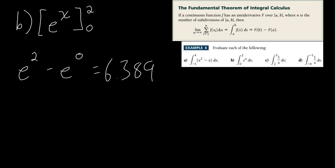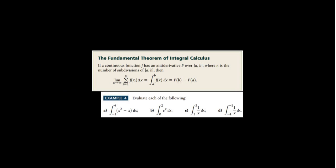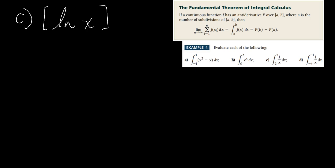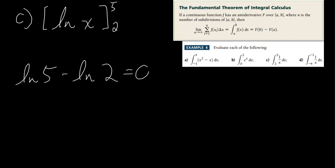Next up we have 1 over x. We know the derivative of natural log of x is 1 over x, so the antiderivative of 1 over x is the natural log of x. We write natural log of x from 2 to 5, giving us natural log of 5 minus natural log of 2, which equals 0.916.